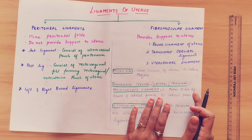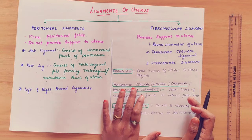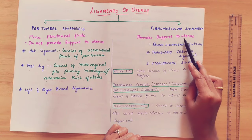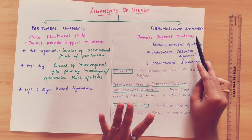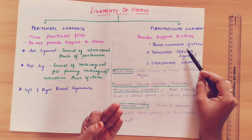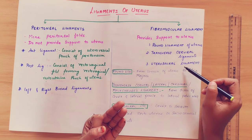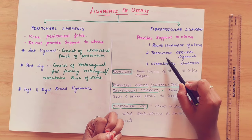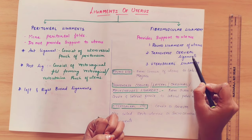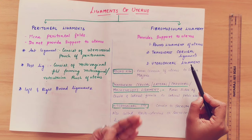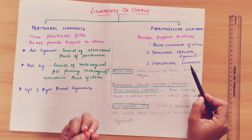Coming to the fibromuscular ligaments — these provide support to the uterus. There are three types: the round ligament of the uterus, the transverse cervical ligament, and the utero-sacral ligament.